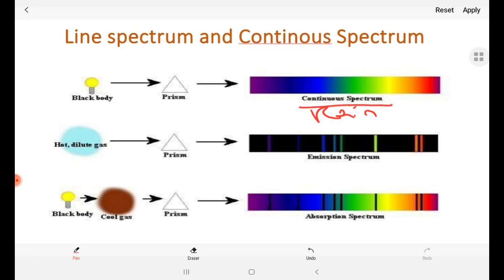Rainbow is the best example for continuous spectrum. The difference between dispersed colors - there is no gap, they are continuous. For example, this is red light, then orange, yellow, green, blue, violet. This is continuous spectrum.